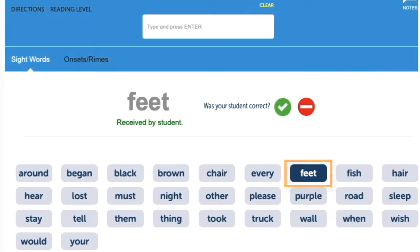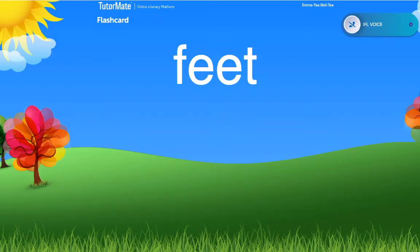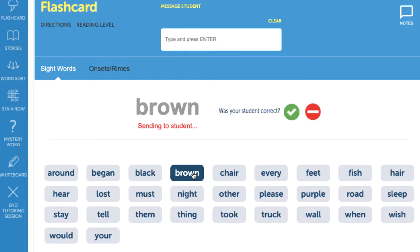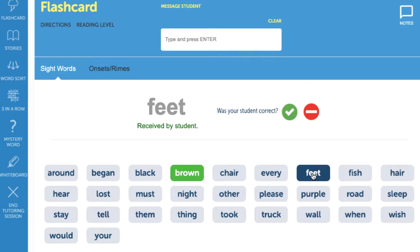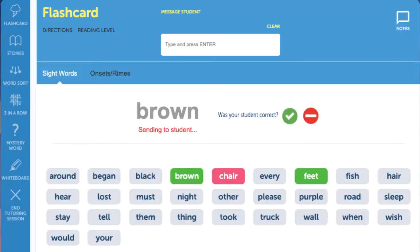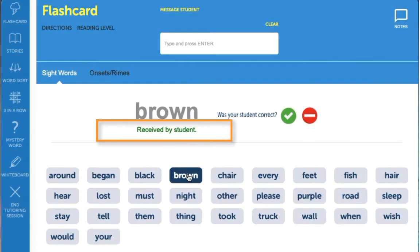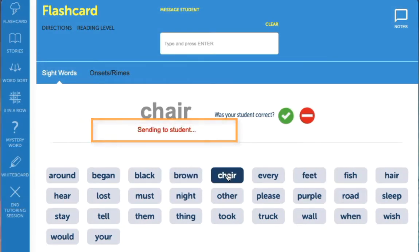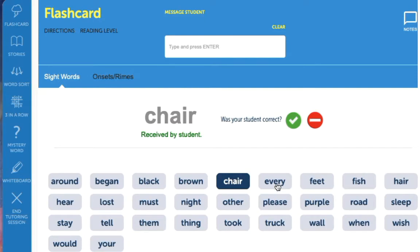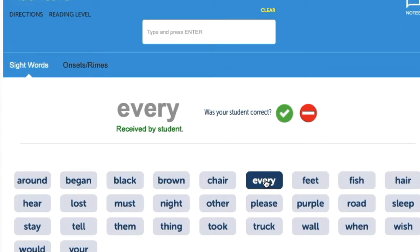When you click on a word, your student will see the same word on their screen. Each time your pupil gets a word correct, mark the word green by clicking on the green button. If your student struggles with a word or gives an incorrect response, mark the card red by clicking on the red button. Your student will only see the words you show them and will not see the words you have color coded in green or red. To confirm your student has received the flashcard you sent, watch for the sending to and received by prompt. This feature is available for every activity and will help you gauge when the student can see the material you sent.